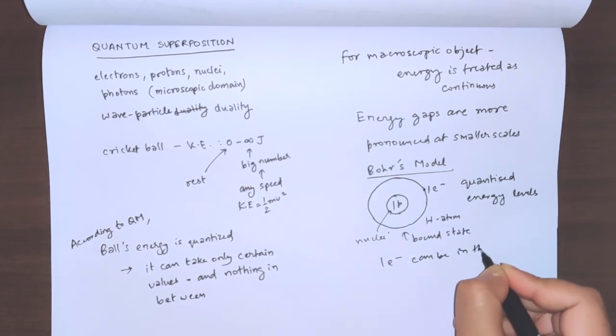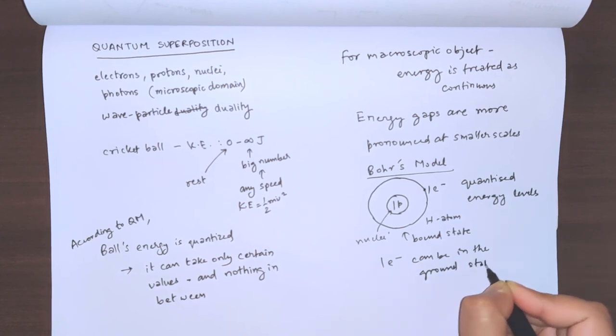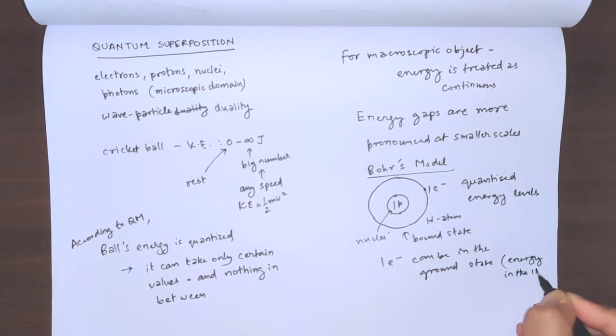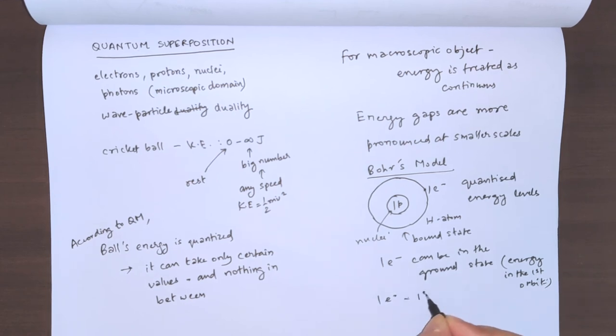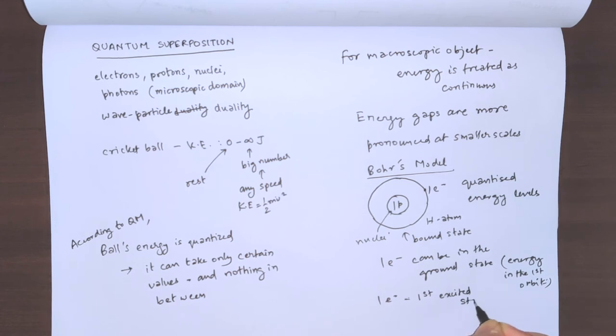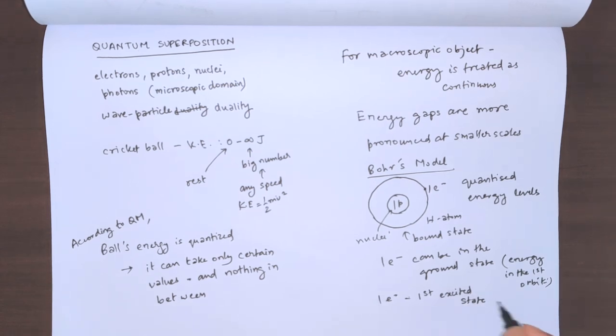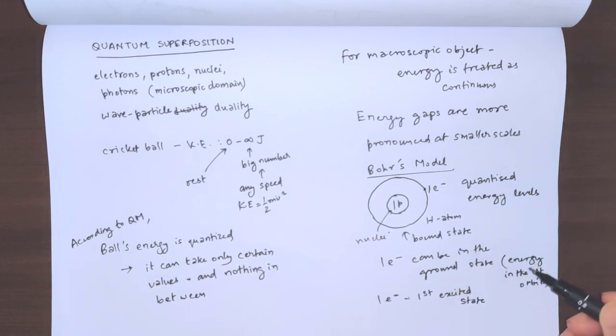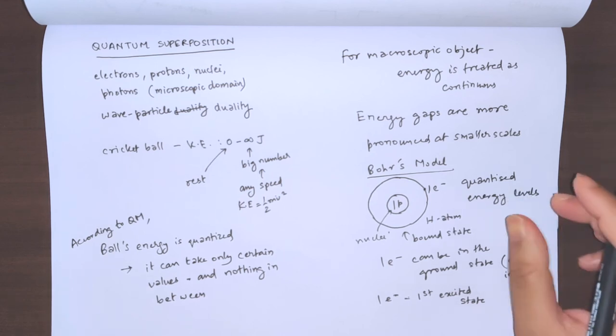These quantized energy levels actually give you the states in which the electron can be. The electron can be in the ground state - ground state meaning the ground energy in the first orbit - or it can be in the first excited state, which has a higher energy level. It keeps on increasing. By quantized energy levels we mean that the states give the corresponding states. The number of discrete energy levels equals the number of states available.